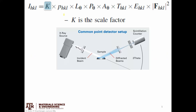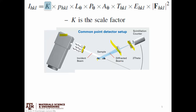The first term, K, is just a scaling factor — kind of a catch-all term. It takes into account the particular setup you have: how bright your x-ray source is, how many x-rays are coming out, how many you're letting through initial slits to hit your sample, and how many slits you're using to remove noise or scattered x-rays. A brighter source or higher current would increase the intensity of every single peak.